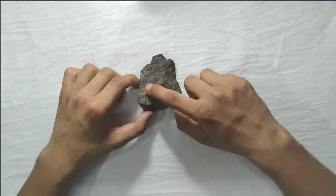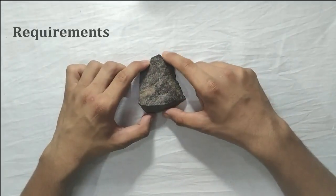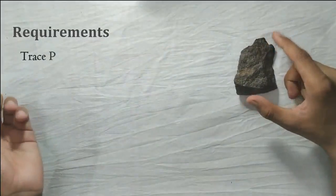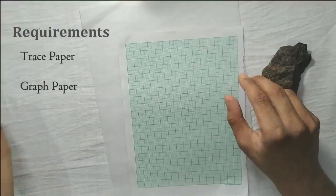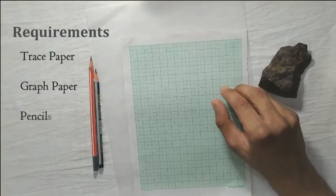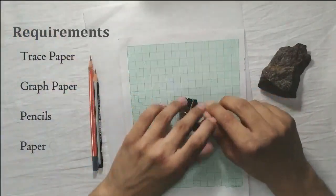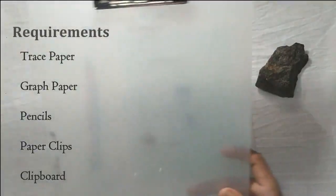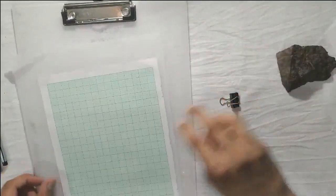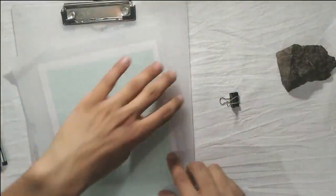Now to begin illustrating a stone tool, we will need a trace paper, a graph paper, pencil, paper clips to attach the trace paper and graph paper, and a clipboard to keep it all. We will begin by attaching the trace papers to the graph papers using paper clips.